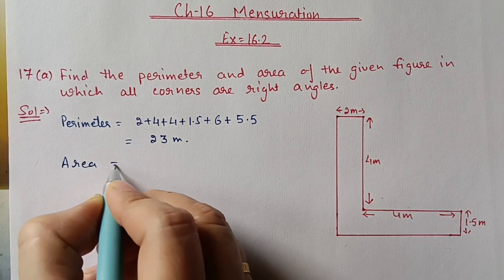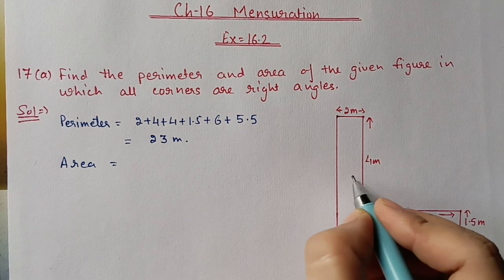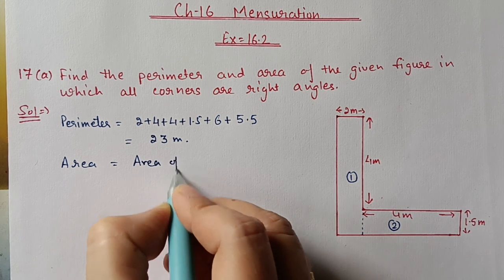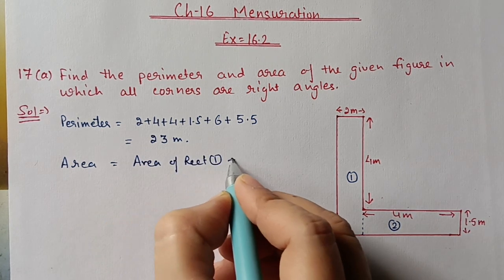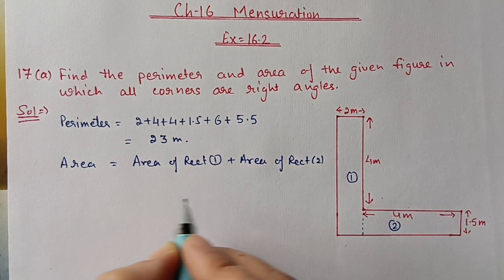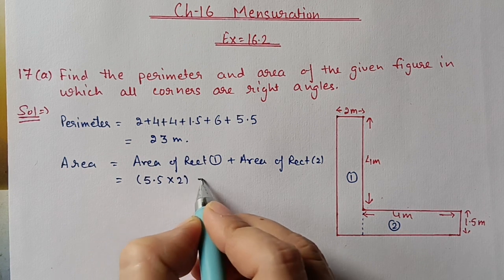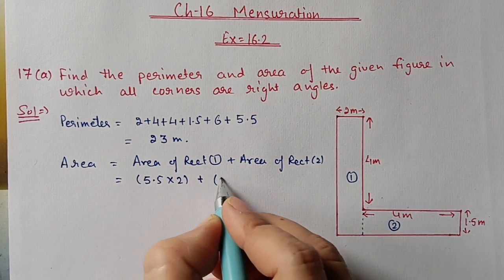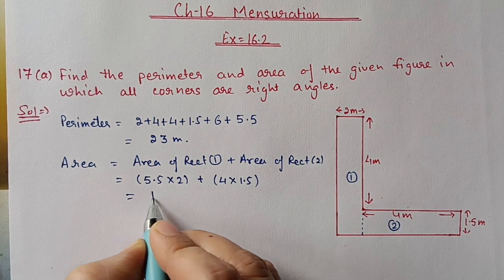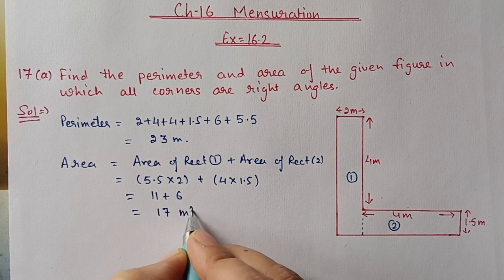For area, we will divide this figure into two parts. Dividing from here, the figure splits into two rectangles. Area of first rectangle: length is 5.5 and breadth is 2, so 5.5 × 2 = 11. Area of second rectangle: length is 4 and breadth is 1.5, so 4 × 1.5 = 6. Adding them: 11 + 6 = 17 square meters.